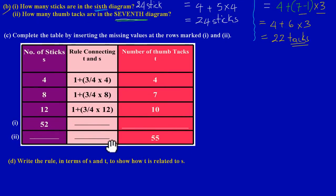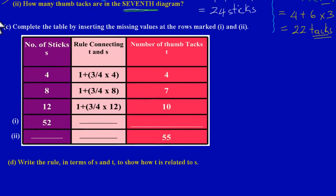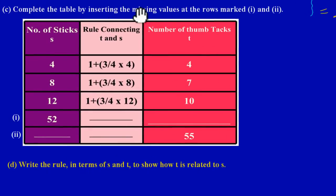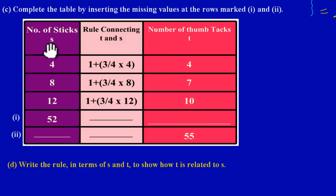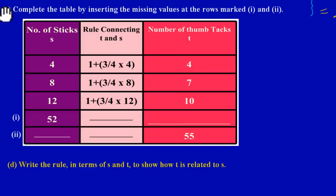Here in Part C they're asking us to complete the table by inserting the missing values at the rows marked one and two. Row one and row two are visible on the side. In Part D they're asking us to write the rule — another word for rule is formula — in terms of s and t, to show how t is related to s. The first column is the number of sticks (s), and the red column is the number of thumbtacks (t).